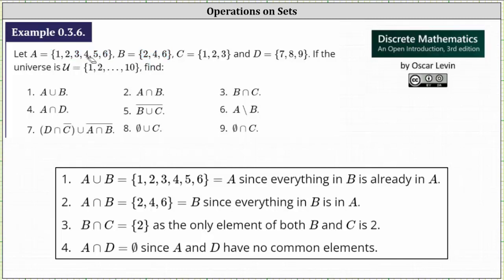For number two, we have A intersect B. A intersect B is the set containing the elements that are in set A and set B. Analyzing set A and set B, the elements 2, 4, and 6 are in both sets. A intersect B is the set containing the elements 2, 4, and 6.